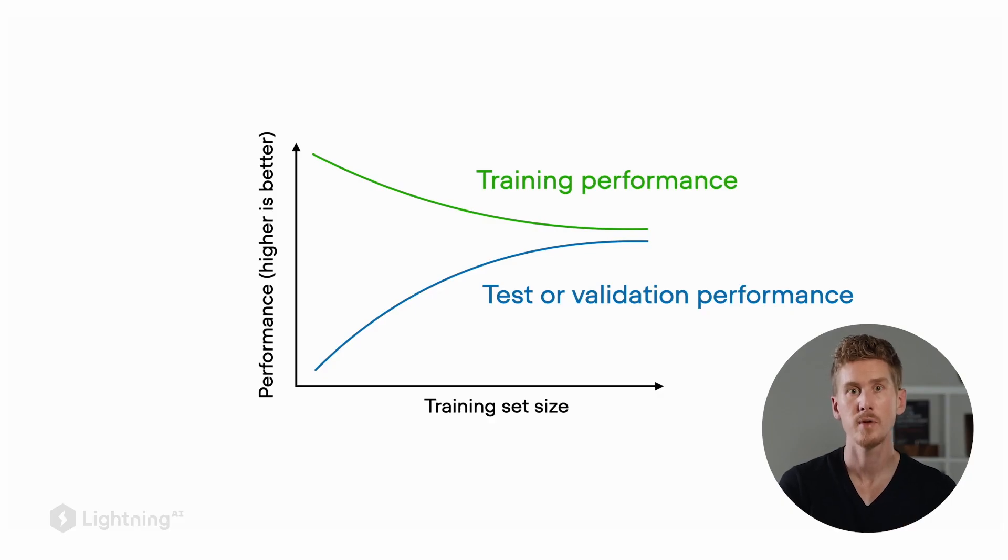In this plot, we visualize the model performance for different training set sizes. The higher the model performance, the better—for instance, this could be the model prediction accuracy. Often when we have a very small training dataset, we will get a very high training performance or accuracy, because it's easy to fit small datasets. The larger the dataset becomes, the harder it will be for the model to memorize it. So usually, for larger datasets, the training performance becomes slightly worse.